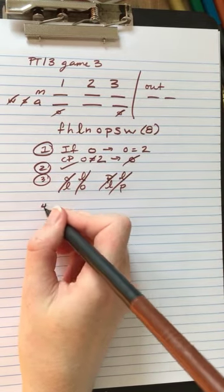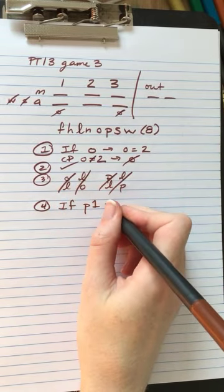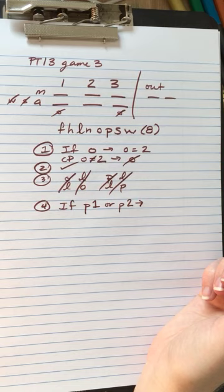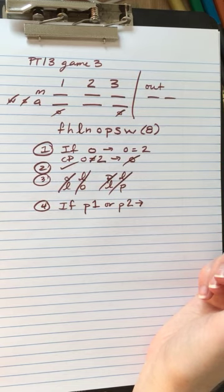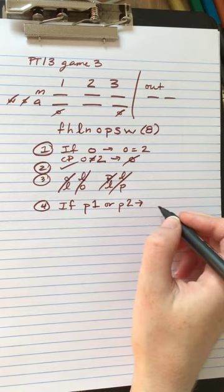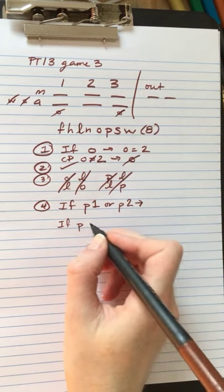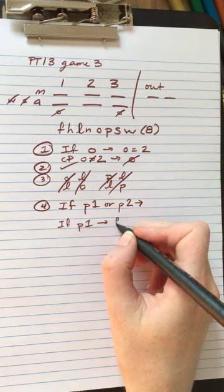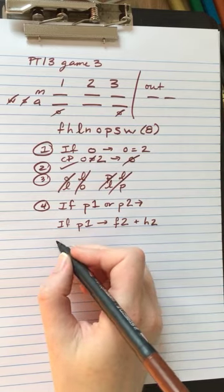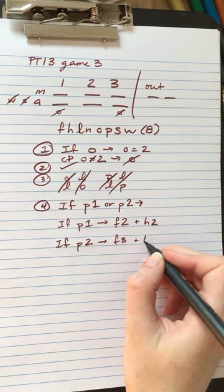Then we have a conditional. So if P is on day one or P is on day two, then the lecture scheduled for the day immediately following must be fresco and history, not necessarily in that order. So this will be easier if we split it up. If pastels is on day one, then fresco is on day two and history is on day two. If pastels is on day two, then fresco is day three and history is day three.